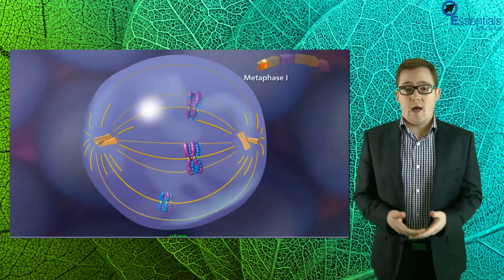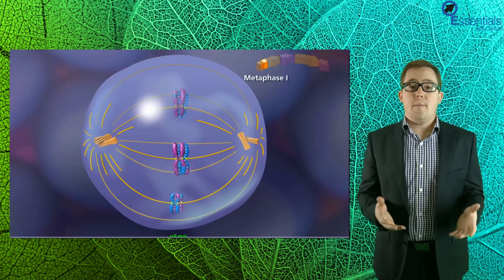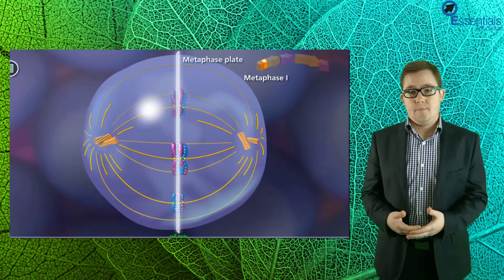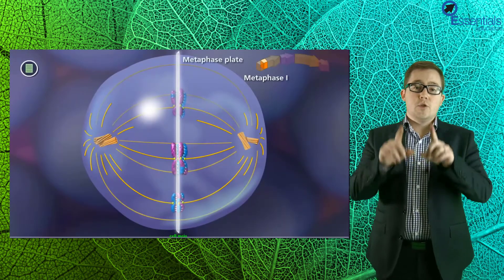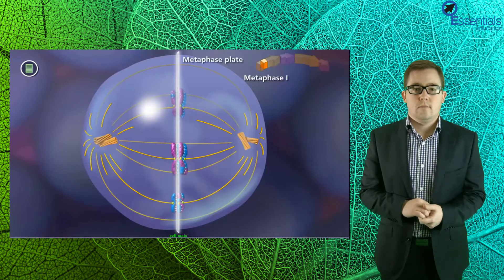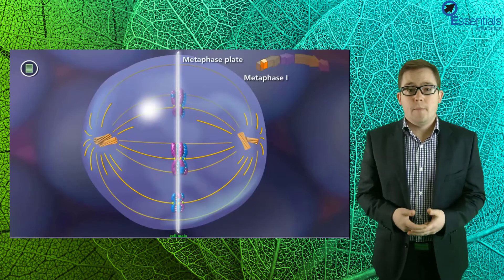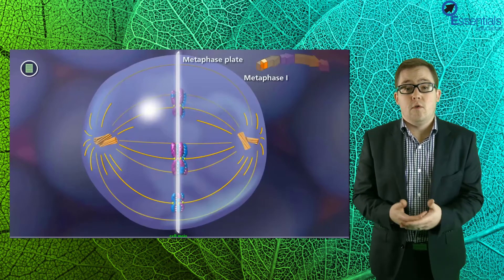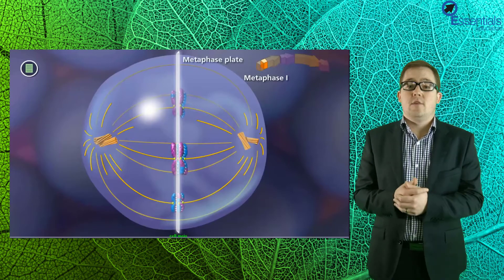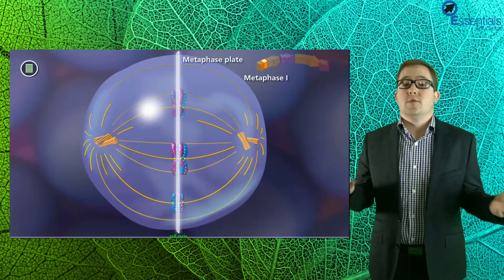Now in metaphase I, the homologous chromosomes line up in the middle of the cell with their partner. So in effect we're going to have two lines of chromosomes in the middle of the cell. Using our analogy from before, we can now imagine that you're on the dance floor with your partner and the DJ asks you all to form two lines because you're going to do a line dance.